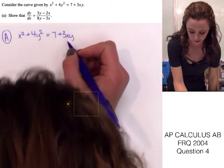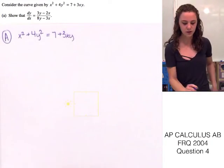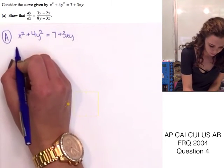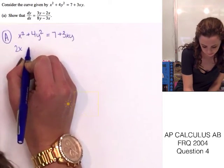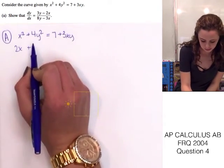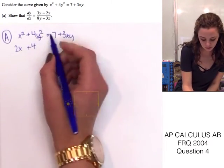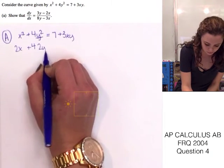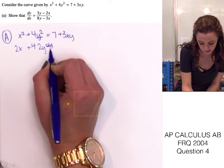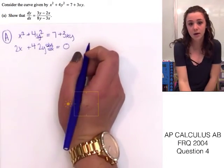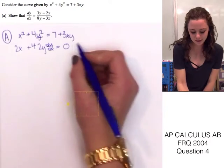We're going to have to go ahead and find the derivative of this function using implicit differentiation. This is just going to be 2x. And since there's a coefficient, we can just leave that and then find the derivative of this part.